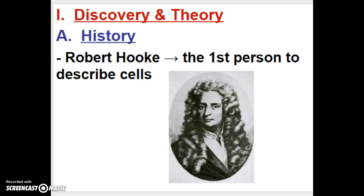If it was not for the invention of the microscope, we would not be able to see things that are smaller than what the naked eye can observe. Robert Hooke was an Englishman who, by trade, made glasses for a living. He was a lens grinder, and he was really the first person to use the beginning rudimentary microscopes to describe and actually coin the term cell.